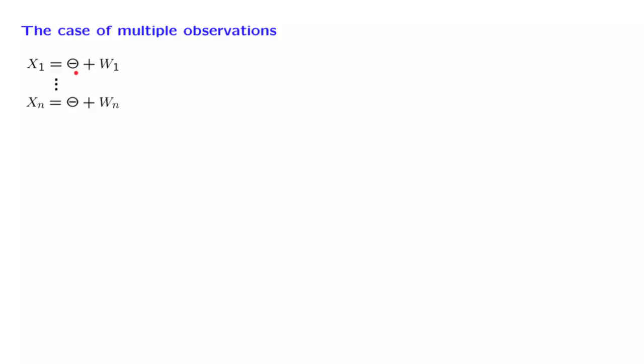The assumptions that we will be making are that theta is a normal random variable. It has a certain mean that we denote by x0. The reason for this strange notation will be seen later. And it also has a certain variance.